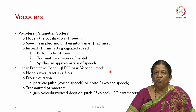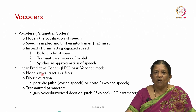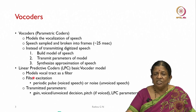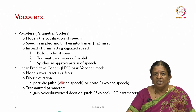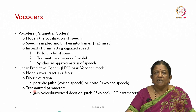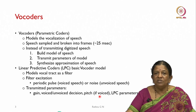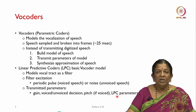The basic coder model models the vocal tract as a filter. The filter excitation is either a periodic pulse for voiced speech or noise for unvoiced speech. Using that, we do the filter excitation and synthetically generate speech at the receiving end. The transmitted parameters are gain, voiced or unvoiced decision, and pitch. If it is voiced we send the pitch, and the rest are the LPC parameters used in the coding techniques.